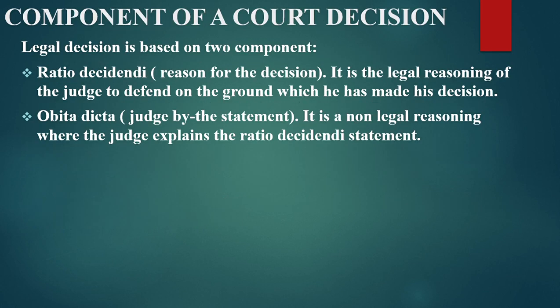Components of a court decision. A legal decision is based on two components. One of them is ratio decidendi — the reason for the decision. It is the legal reasoning of the judge to defend the grounds on which he made his decision. Ratio decidendi is the statement given by the judge to defend how he made a certain decision.